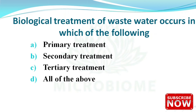Next: biological treatment of wastewater occurs in which of the following stages? The options are primary treatment, secondary treatment, tertiary treatment, and all of the above. The right answer is option B — secondary treatment.